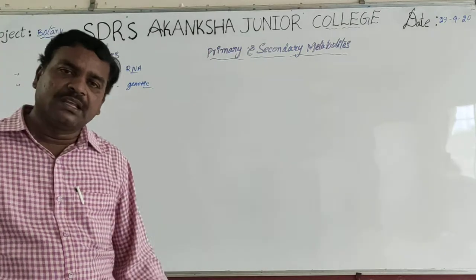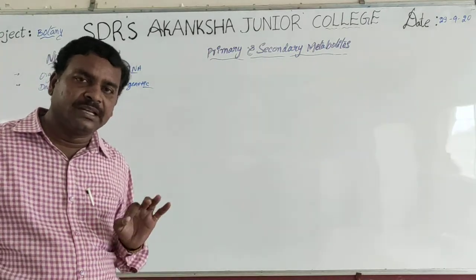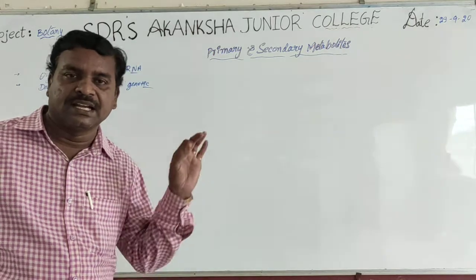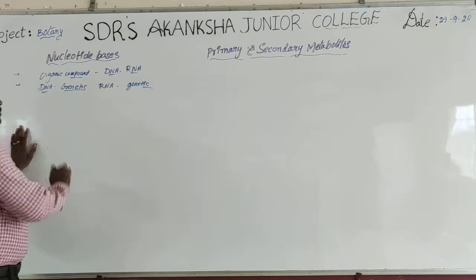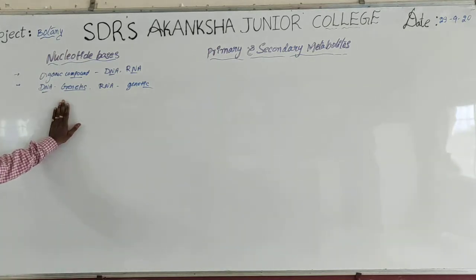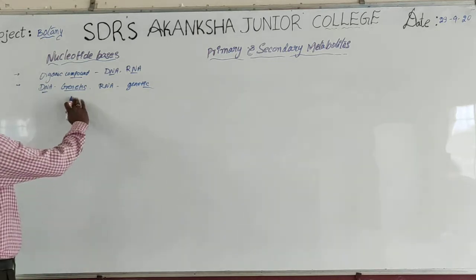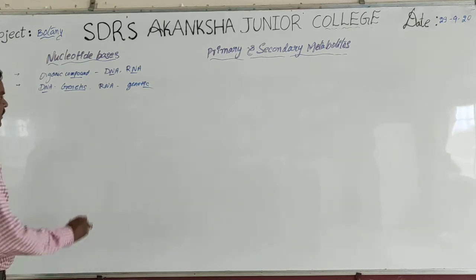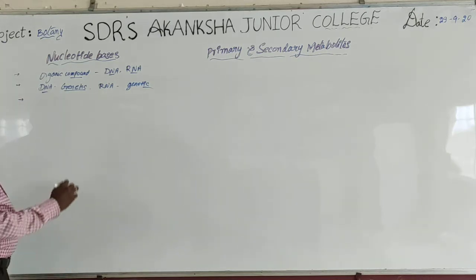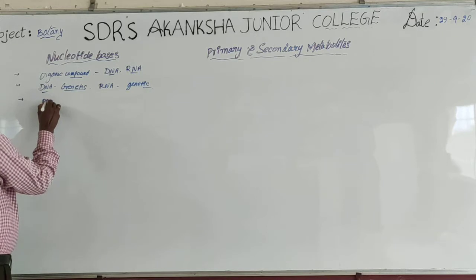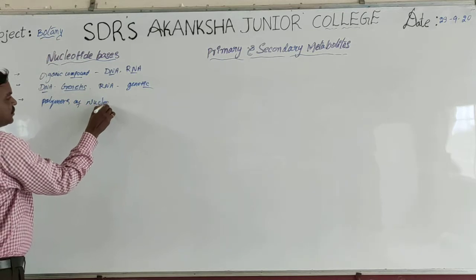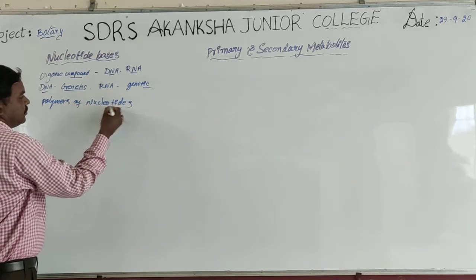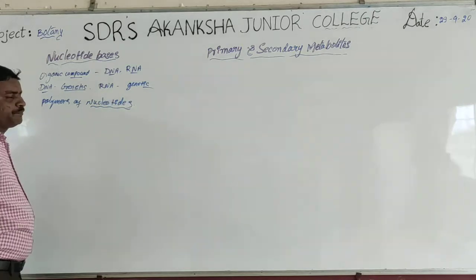RNA is also genetic material but it is the genetic material only in some plant viruses and other places. Except this, genetic material in most of our organisms is DNA — deoxyribonucleic acid. So, this DNA and RNA are the polymers of nucleotides.